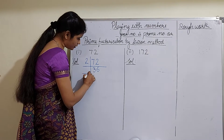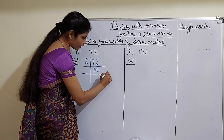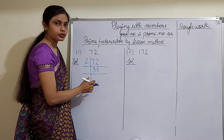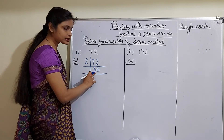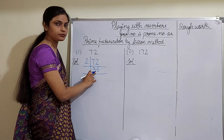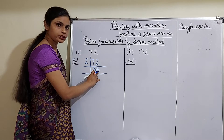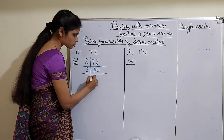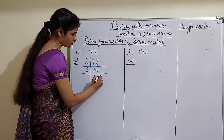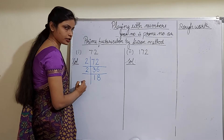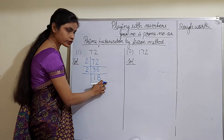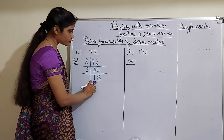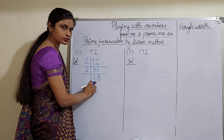Now again, divide this by another prime number. The smallest prime number is 2, and 36 is exactly divisible by 2 because the unit digit is 6. You have written the quotient. When 36 is divided by 2, you will get 18 as the quotient.